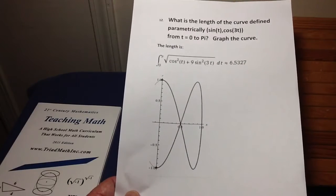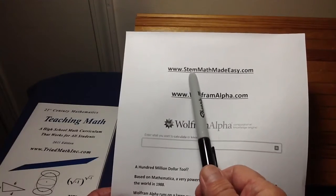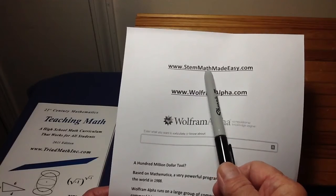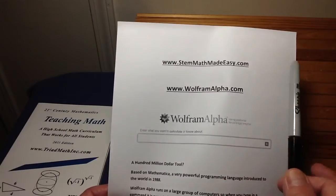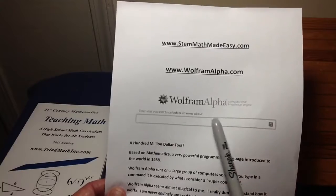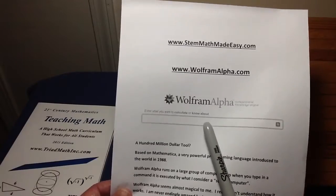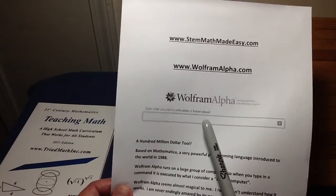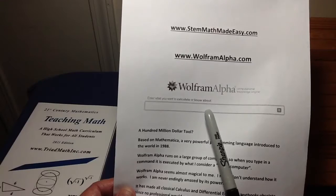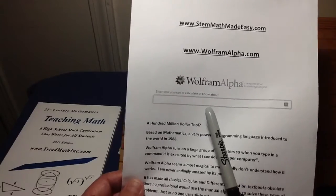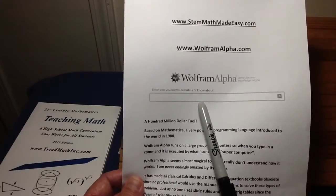So what should you do? I recommend you go to stemmathmadeeasy.com, that's our website, and you can download all 12 of these problems and the answers in a PDF format so that you can play with them yourself. And you can see if you can figure out how to use Wolfram Alpha to solve them. Maybe go to your calculus teacher or go to other students you know and see if you can figure out how to use Wolfram Alpha to solve them. Because as a STEM major or a STEM student, that's what you're going to need to do. Believe me, this is going to give you a tremendous advantage over people that don't know how to do it. And indeed, you'll be at a huge disadvantage if you're competing with people that do know how to do it. And some people, believe me, are going to know how to do it.